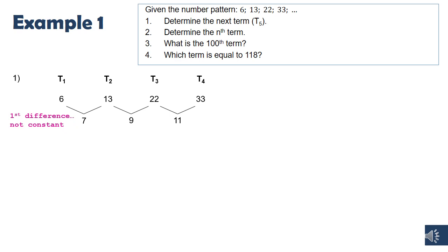But I notice that the first differences, so 7, 9, 11, that is a linear pattern. So it's going up by twos. So if I take the difference between those, we call this the second difference, because I'm taking the difference the second time. I can see that that difference is now constant. And whenever you have a second difference that's constant, that's when we know that we have a quadratic number pattern.